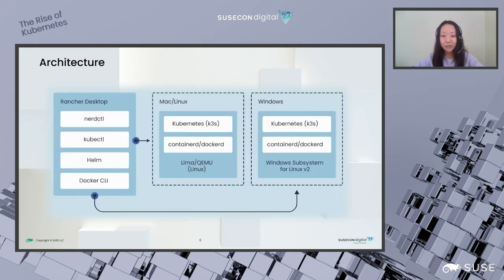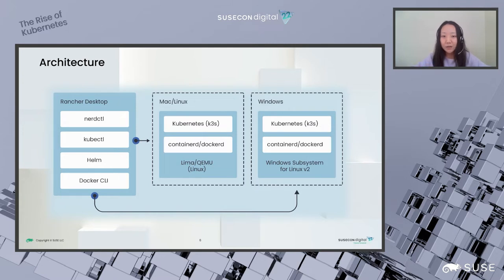Here's the architecture — how it works under the hood. Rancher Desktop bundles a bunch of utilities: nerdctl, kubectl, Helm, and Docker CLI. nerdctl is a Docker-compatible CLI that works with the ContainerD engine — it's the way to build images when you use Rancher Desktop with ContainerD. There's kubectl, which is your Kubernetes command line, and Helm, the package manager. We also have Docker CLI, which works with a DockerD container runtime. So you have two options: nerdctl for ContainerD, or Docker CLI for DockerD.